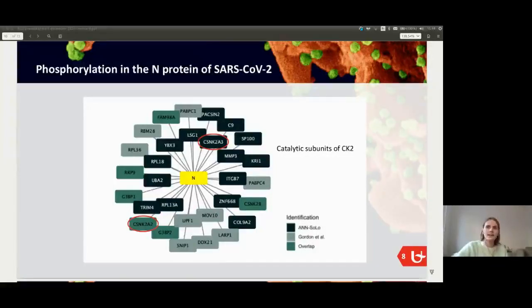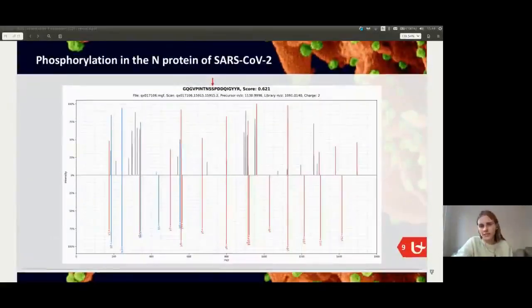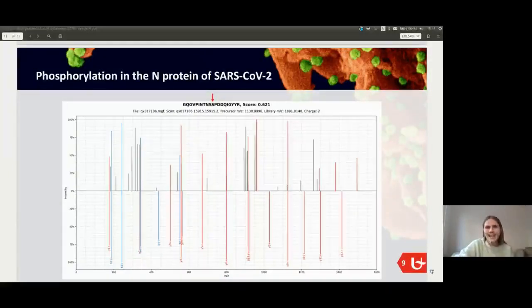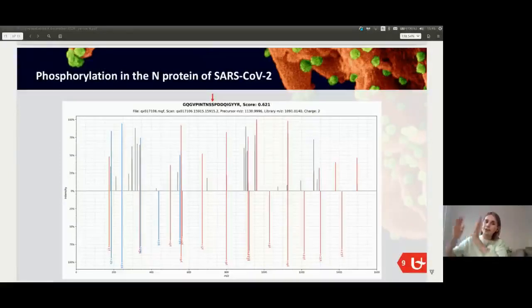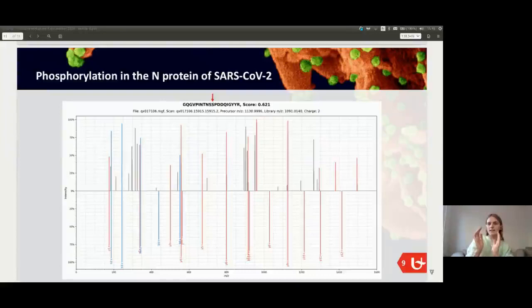CK2A3 is a kinase. And we thought it would be interesting to see whether there are spectra that were matched to the N protein that contained phosphorylation. And we found a couple of spectra that did. So we used a tool to look at the spectra and see whether we can pinpoint the modification. Here you can see visualization of the spectrum. And you can see that at the end, the spectra has shifted. And this is where the phosphorylation occurred. So the mass is larger because at that part of the peptide, the phosphorylation is present. And it could be located to one specific serine. And this same serine was predicted to be a phosphorylation site of CK2, the kinase that was also found to interact with the protein.